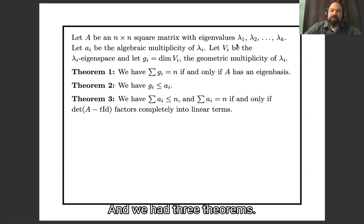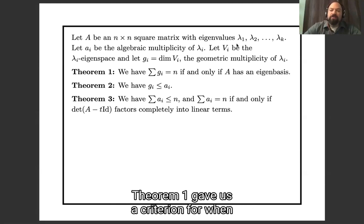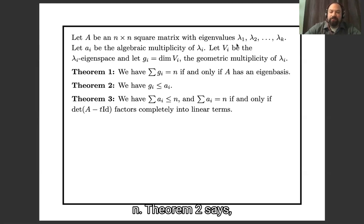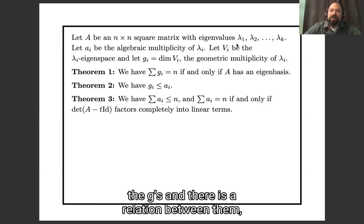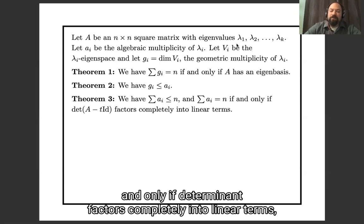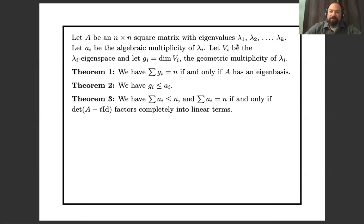We had three theorems. Theorem 1 gave us a criterion for when there was an eigenbasis in terms of the G's — there's an eigenbasis if and only if the sum of the G's adds up to n. Theorem 2 says the G's are less than or equal to the A's. And Theorem 3 says the A's add up to n if and only if the characteristic polynomial factors completely into linear terms.